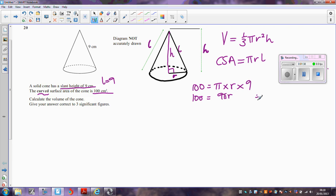You can then see that to find r, you're going to divide by that 9 pi. So we're going to end up with r is equal to 100 divided by 9 pi. And if you work that out on your calculator, the radius r comes out as 3.5367.